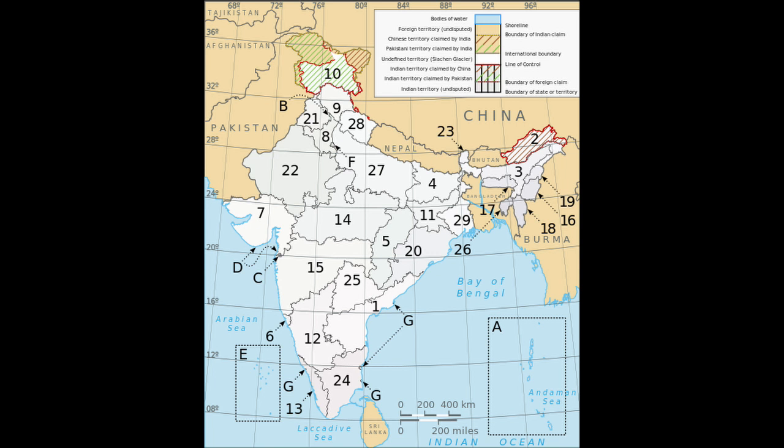In May 2017, the Indian Space Research Organization launched the South Asia Satellite, a gift from India to its neighboring SAARC countries. In October 2018, India signed a 5.43 billion US dollars agreement with Russia to procure S-400 Triumph surface-to-air missile defense systems, Russia's most advanced long-range missile defense system.